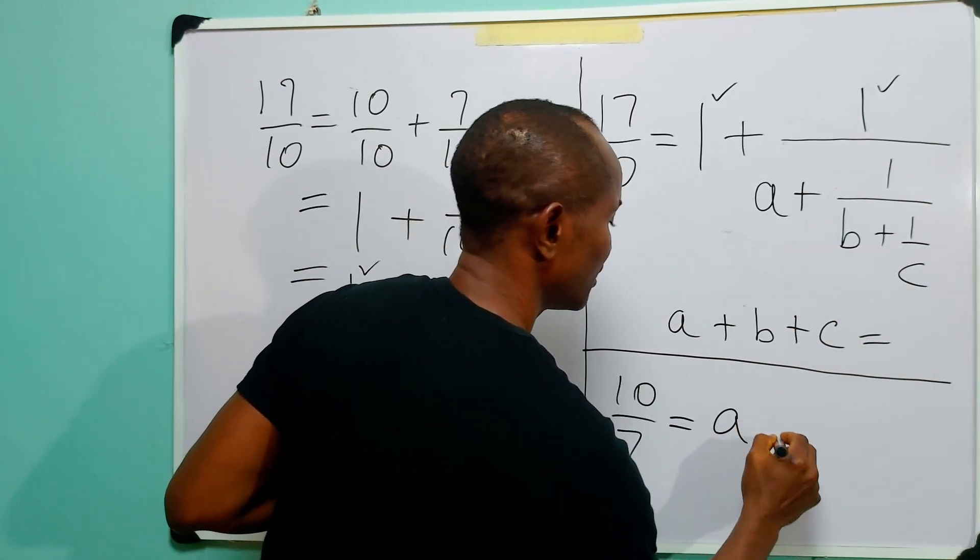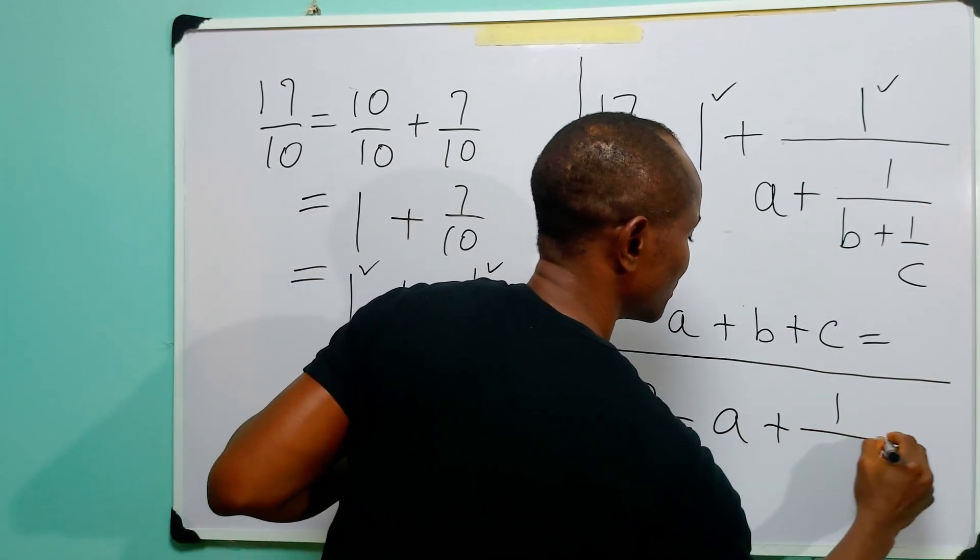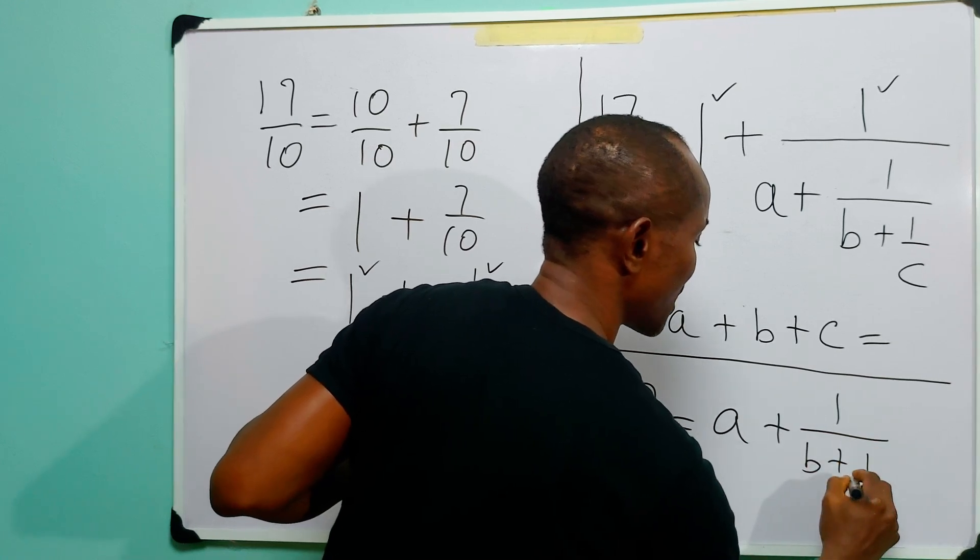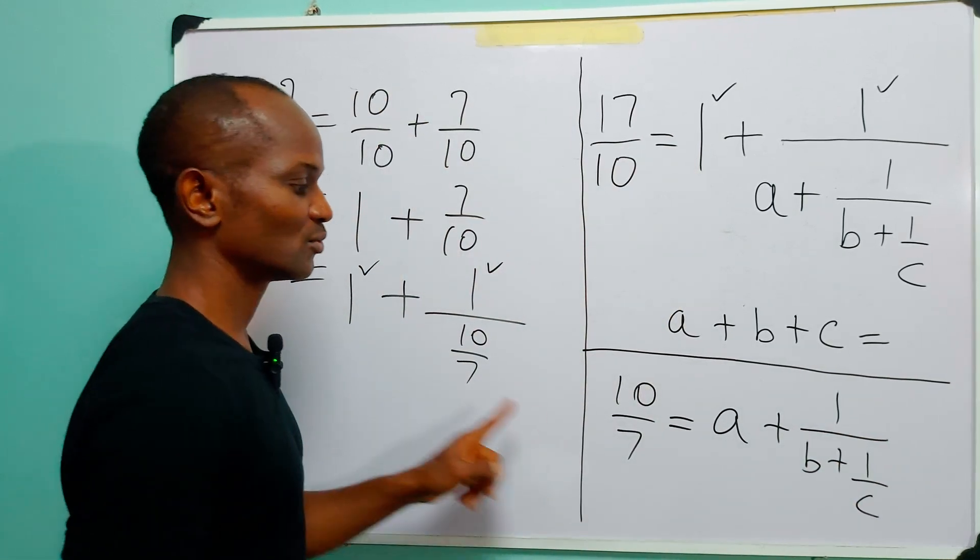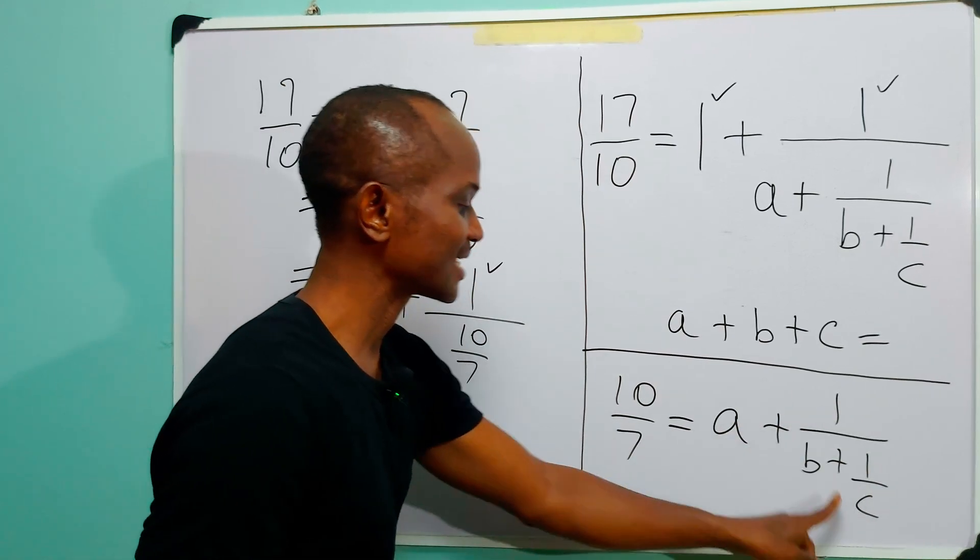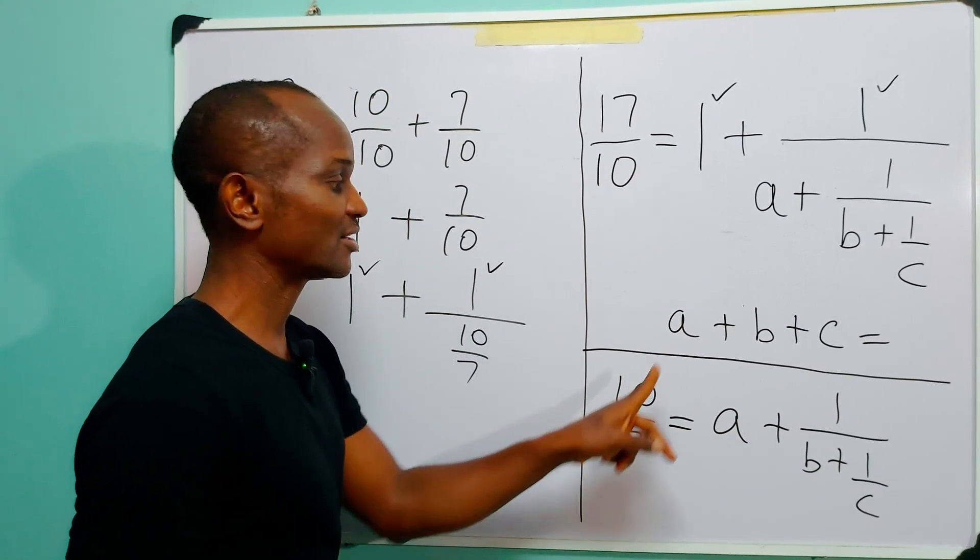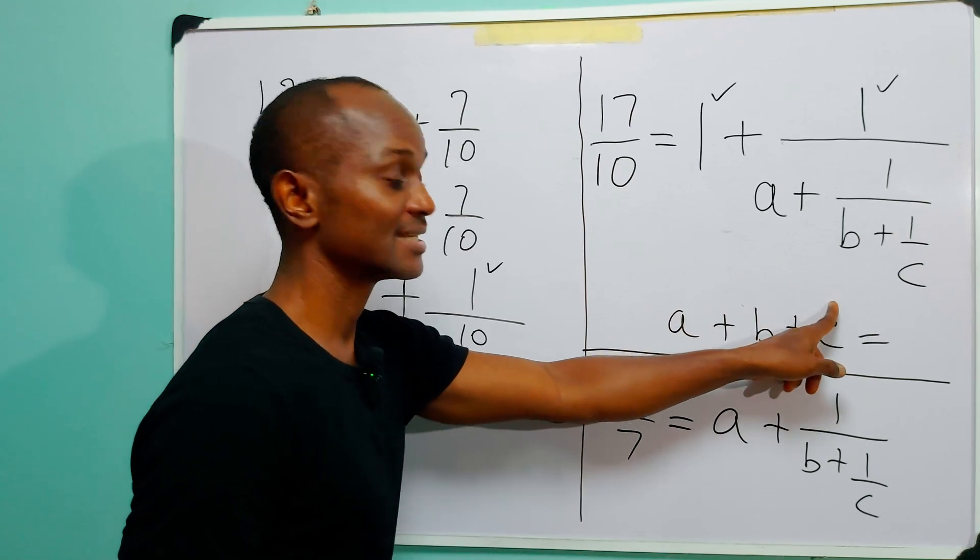...which is A plus 1 over B plus 1 over C. So our next line of action will be to simplify this and find a way to fix the values of A, B, and C...